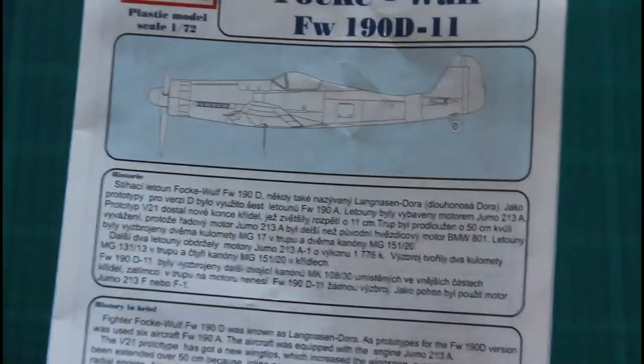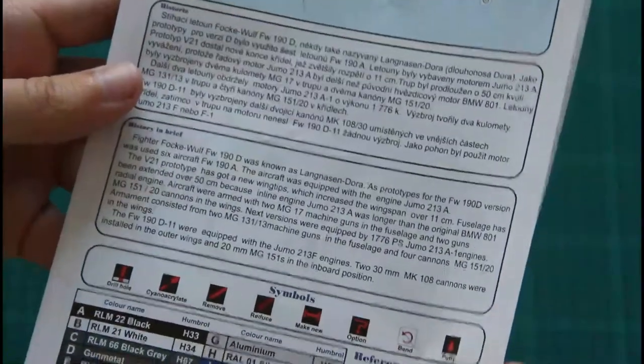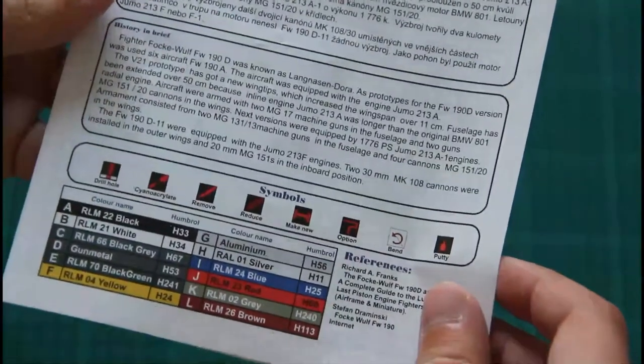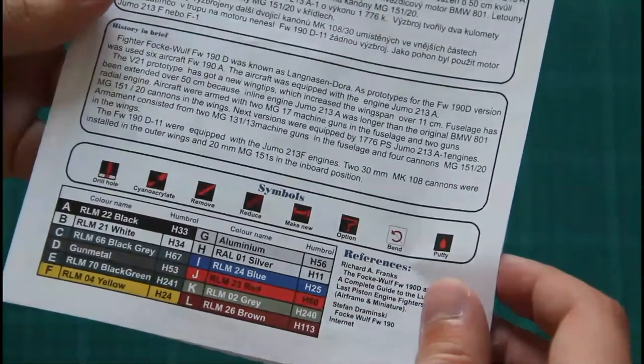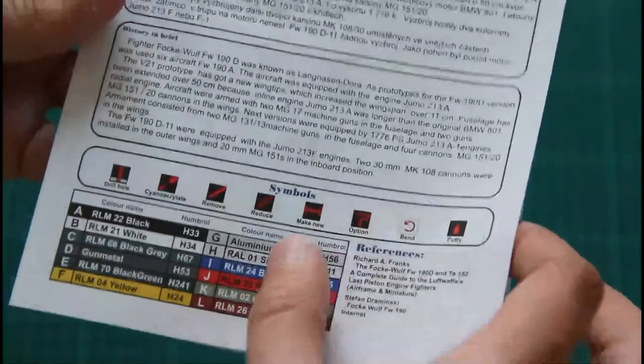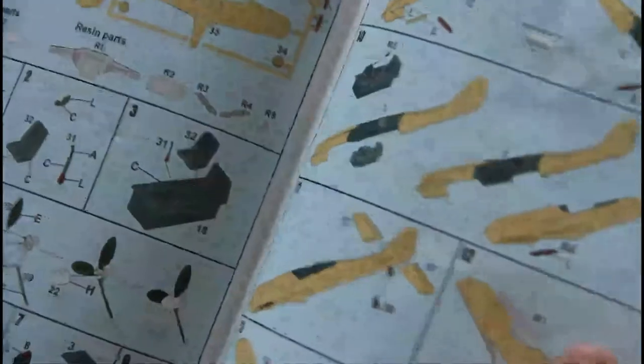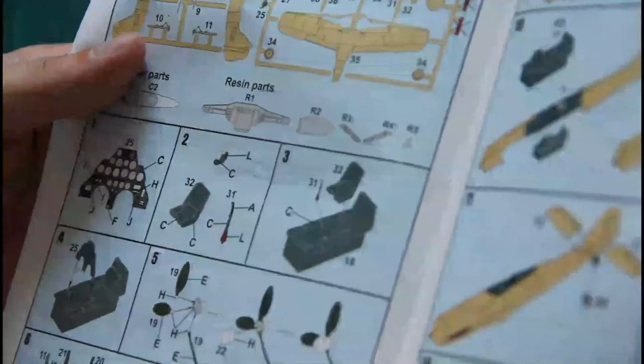Then we have a nice manual with short history as usual. Some color references which are done in Humbro paint codes, but still you have ROM codes, so you can guess which paint you need if you use some other manufacturer.